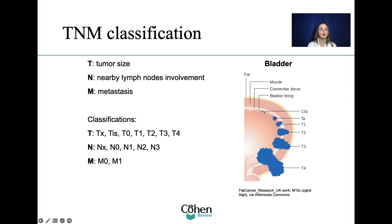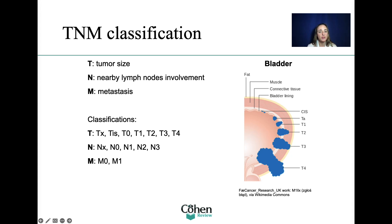Let's talk about TNM classification. This is a globally recognized standard for classifying the anatomical extent of the spread of malignant tumors. T stands for tumor size, N is for lymph node involvement, and M is for metastases. What you need to know for the exam is what each letter stands for and what it means. Within each letter there are subcategories — for T, there's TX, TIS, and T0 through T4, which describe the size of the tumor. The smaller the number, the smaller the tumor.